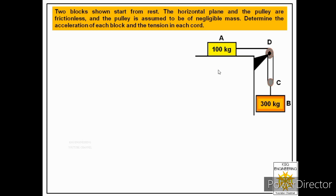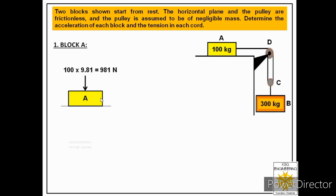Let us start with block A. To construct its free body diagram, we represent the block on the horizontal surface and label all forces. The first force is the weight of the block. The mass is 100 kilograms, so multiplying by 9.81 gives a weight of 981 newtons acting in the downward direction.